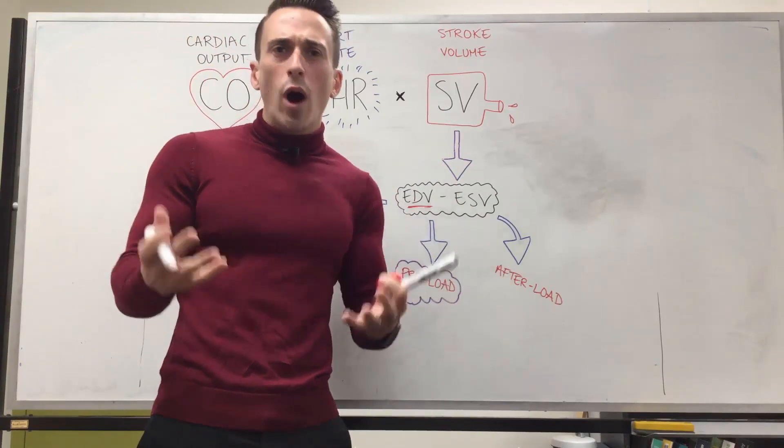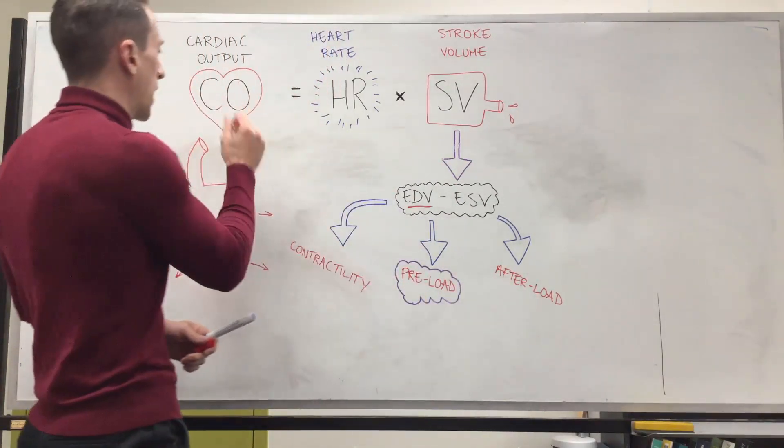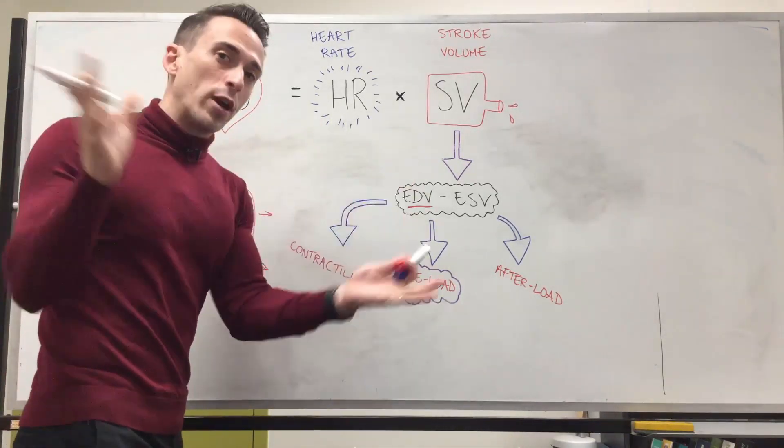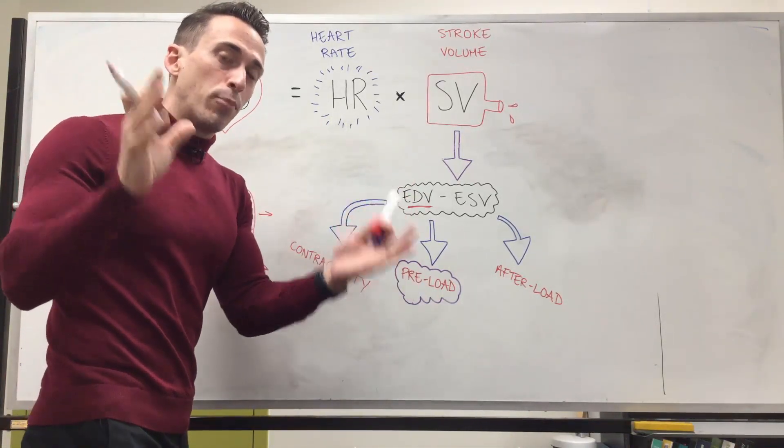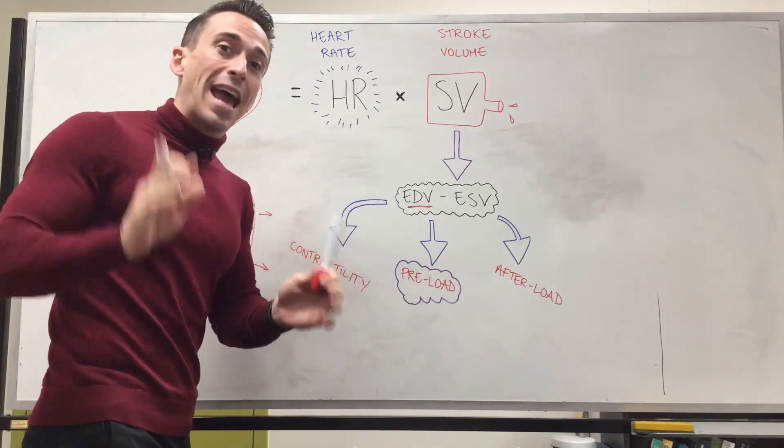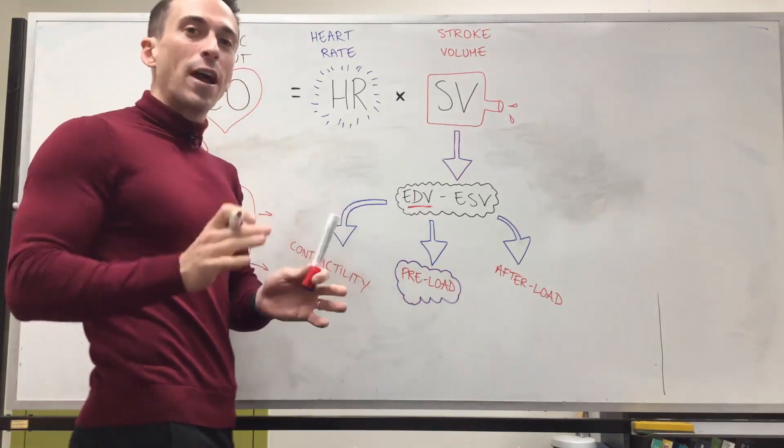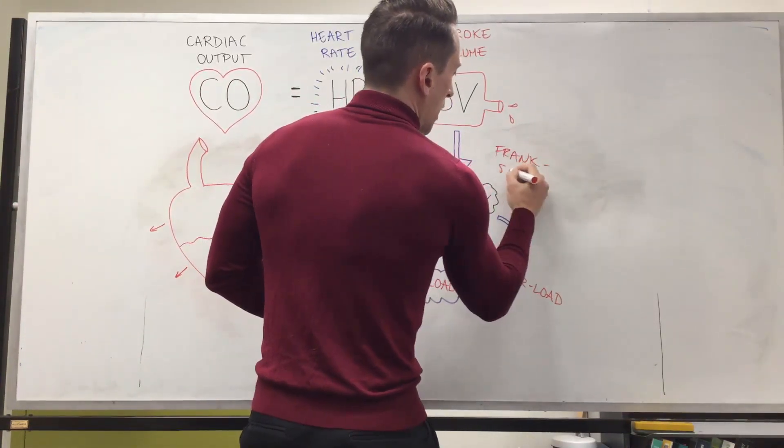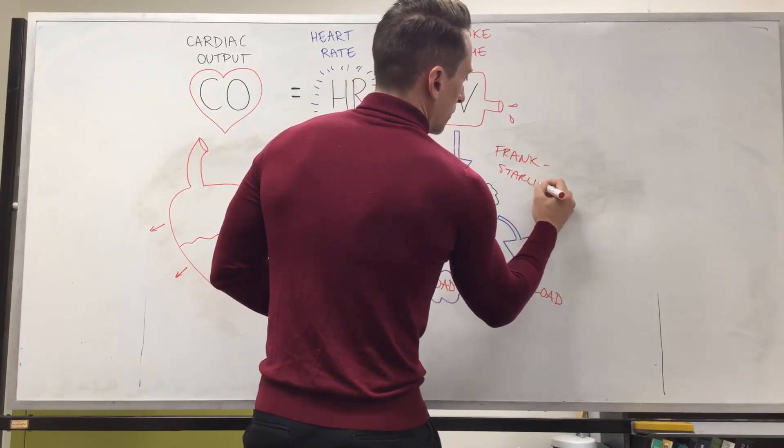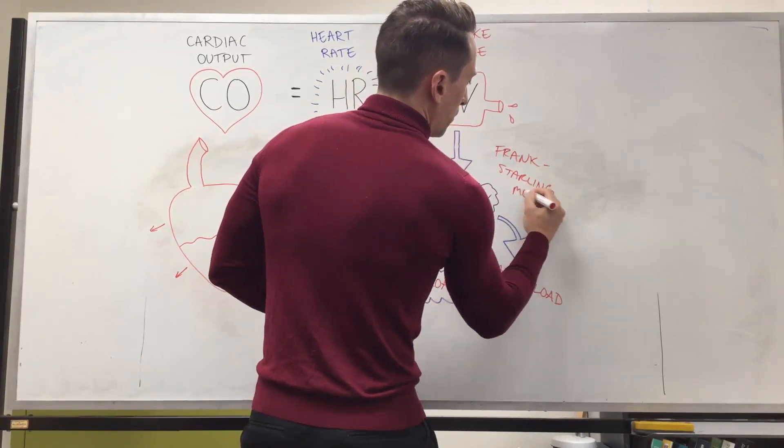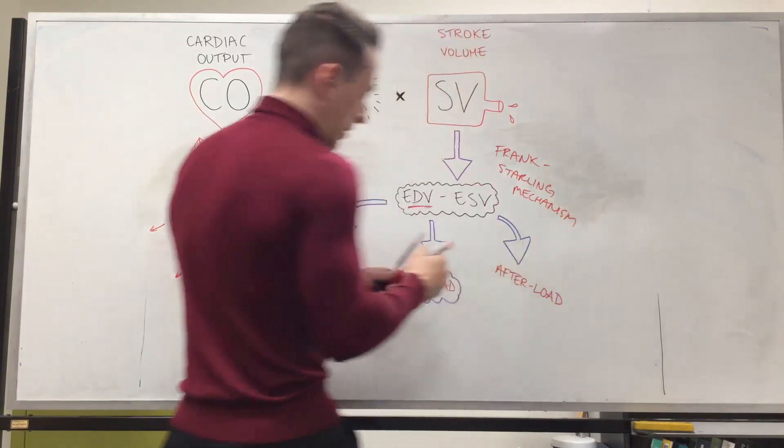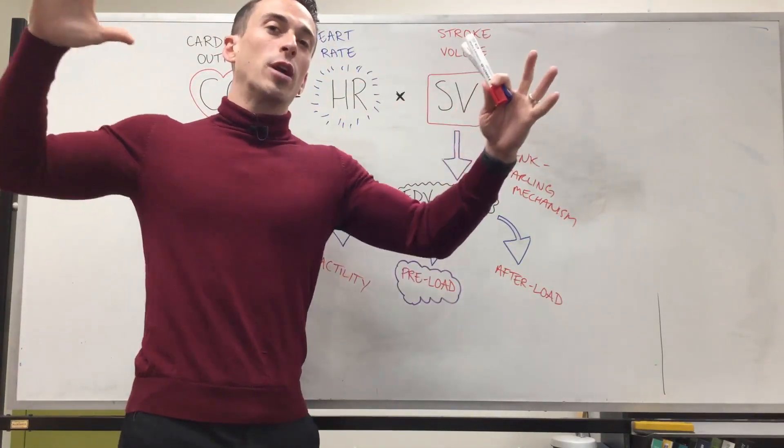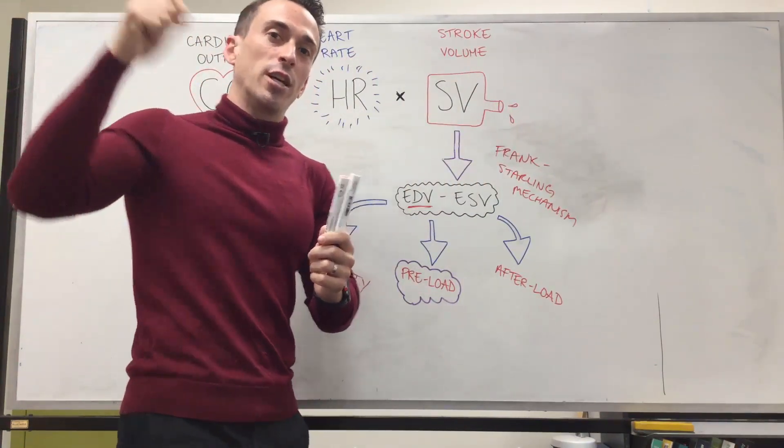You're probably thinking why is this important for us to understand cardiac output and the reason is because the preload or the maximum stretch of the walls of the ventricles is proportional to the amount of blood that gets ejected out of the heart. This is called the Frank-Starling mechanism. The Frank-Starling mechanism basically states the more you stretch or fill the heart with blood, the stronger that contraction is going to be and the more blood gets ejected.